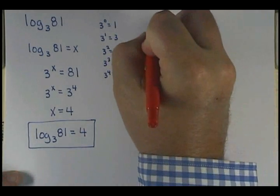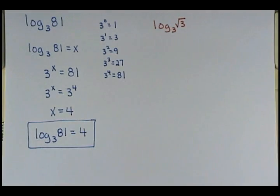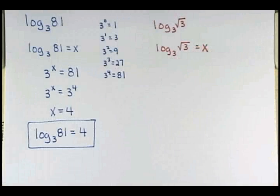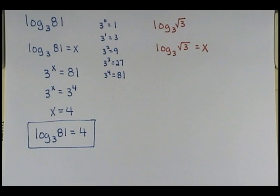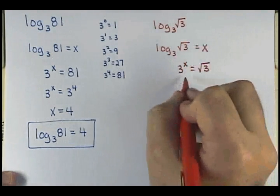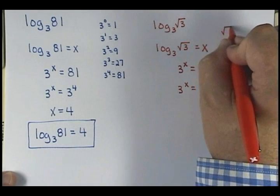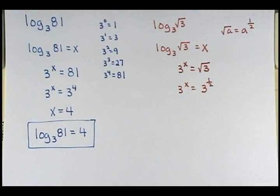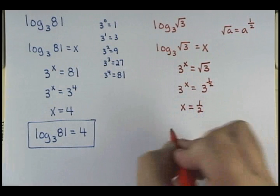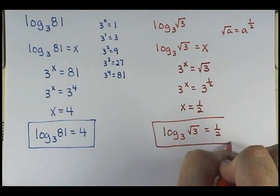Let's say we had: the log of the square root of 3 to the base 3. Set it equal to x. Rewrite in exponential: 3 to the x equals the square root of 3. How can you rewrite the square root of 3? 3 to the 1/2 power. So x equals 1/2. The log of the square root of 3 to the base 3 equals 1/2.